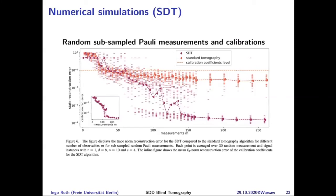For the more realistic over-rotation/under-rotation model, the SDT algorithm does not perform well because the calibration measurement model is deterministically structured and correlated rather than random. There, the constrained ALS implementation is needed, and it gives good results for recovering the over-rotation and under-rotation parameters.